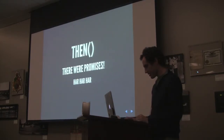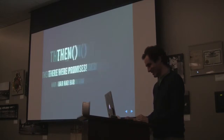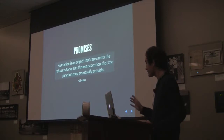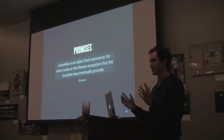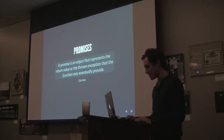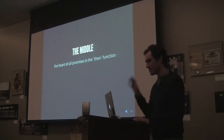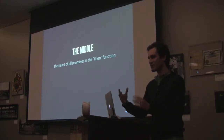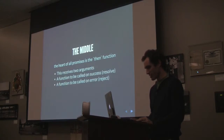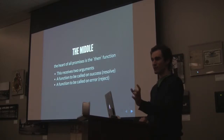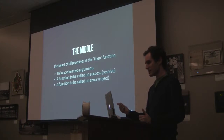Then there are promises. A promise is an object that represents the return value or thrown exception that a function provides. These definitions are from the Q.js docs — highly recommend checking them out if you want to dive deeper. The heart of all promises is the 'then' function, which takes two other functions as arguments: one called on success and one called on errors — called resolve and reject most of the time.